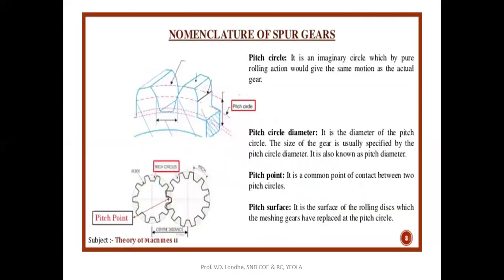The pitch circle is the mid-circle of the teeth — it is the circle passing through the center of the teeth depth. The basic definition of the pitch circle is that it is an imaginary circle by which you get pure rolling motion between the gear pair. When we see a gear pair in a mating position, the pitch circle of the pinion and the pitch circle of the gear meet at one common point called the pitch point.